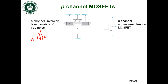And again, we have the enhancement mode P-channel MOSFET. The shaded area is the space charge region. For this enhancement mode MOSFET, there's no channel between the source and the drain. I have to apply a voltage in order to induce that channel and get current to flow between the source and the drain.